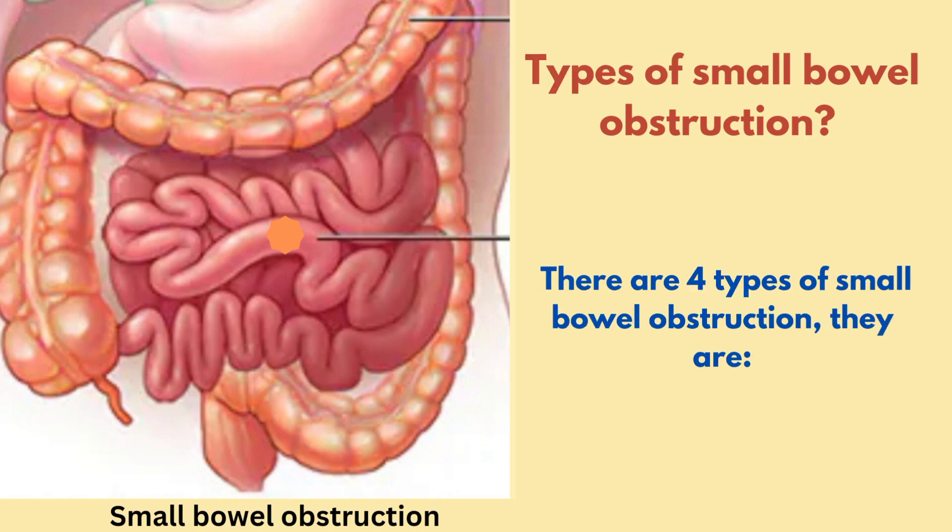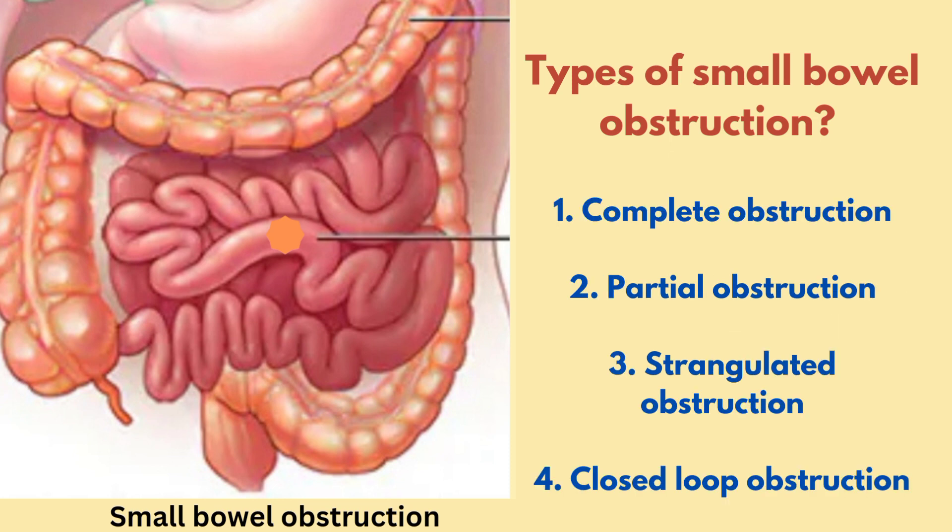Now let's see the types of small bowel obstruction. There are four types: complete small bowel obstruction, partial small bowel obstruction, strangulated small bowel obstruction, and closed-loop small bowel obstruction.